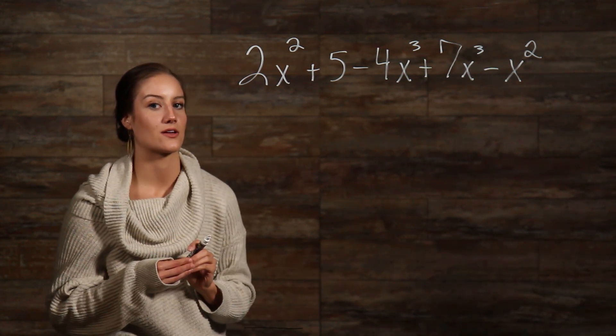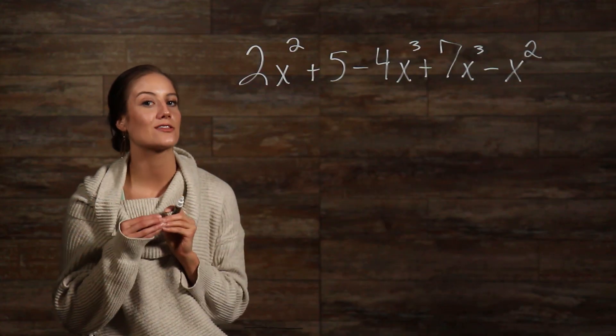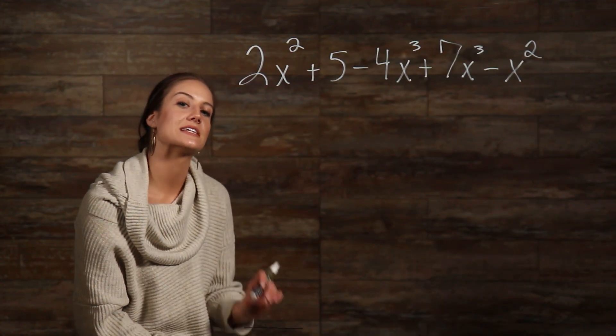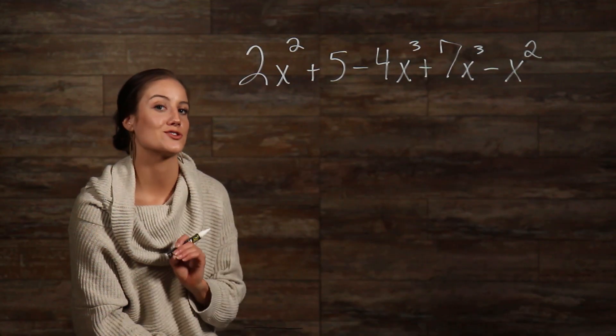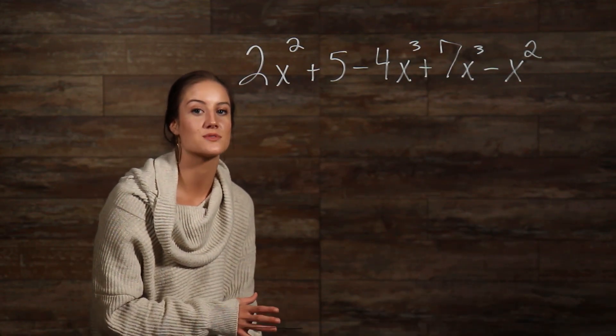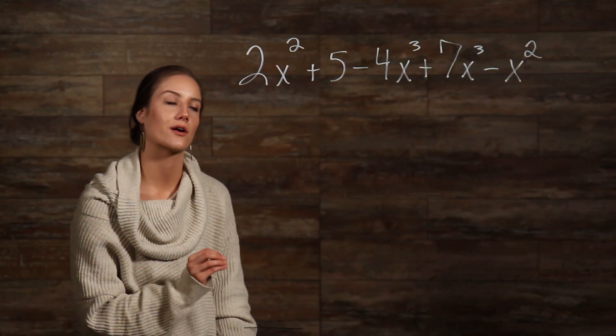We know that to combine our like terms together, all we need to do is add together the coefficients of the corresponding like terms. So, here's how we can do that. Since we're adding together the coefficients of 2x squared and negative x squared together, and all other like terms, we can rewrite this expression to help us follow our work.